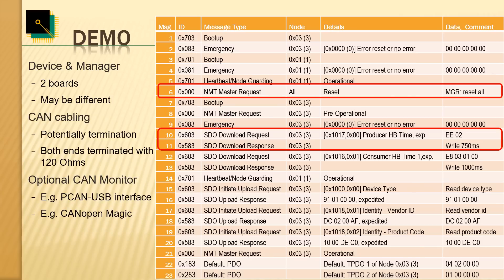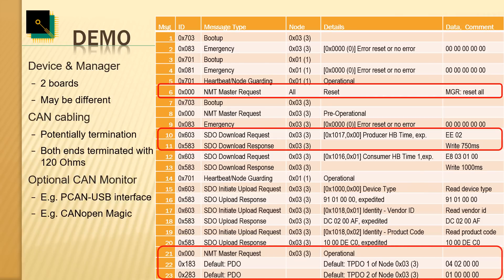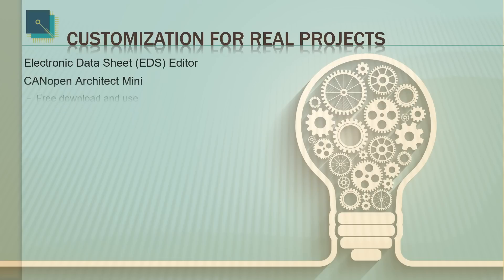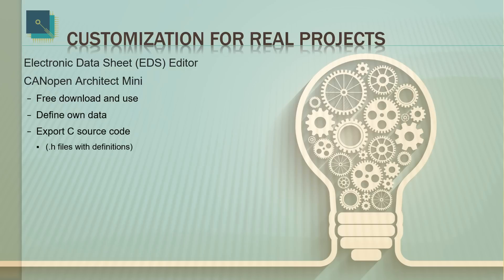There are several more SDO requests back and forth between the manager and device node 3, until line 21 where we see another Network Management master request — the command to node 3 to switch into operational mode. This means it will start transmitting process data from then on, and on lines 22 and 23, as a result of that request, node 3 starts transmitting the process data. To simplify customization, we provide an Electronic Data Sheet (EDS) editor. The EDS is the specification of all CANopen communication and data parameters.